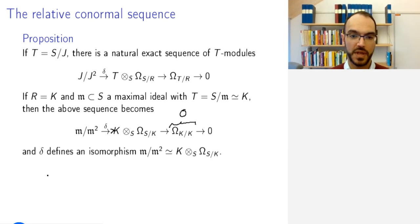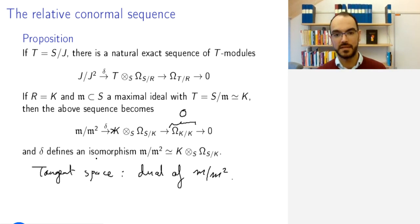Delta defines an isomorphism between M mod M squared and K tensor this omega K. In other words, remember that when we define the tangent space, we define the tangent space as the dual of M tensor M squared. So M mod M squared is the cotangent space, and this shows that the cotangent space is the module of differentials of S viewed as a K vector space.